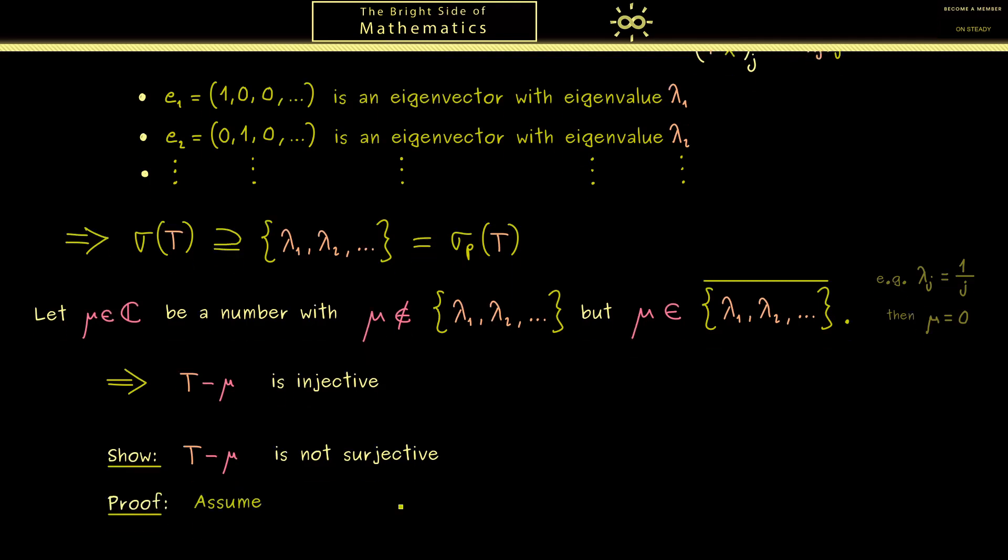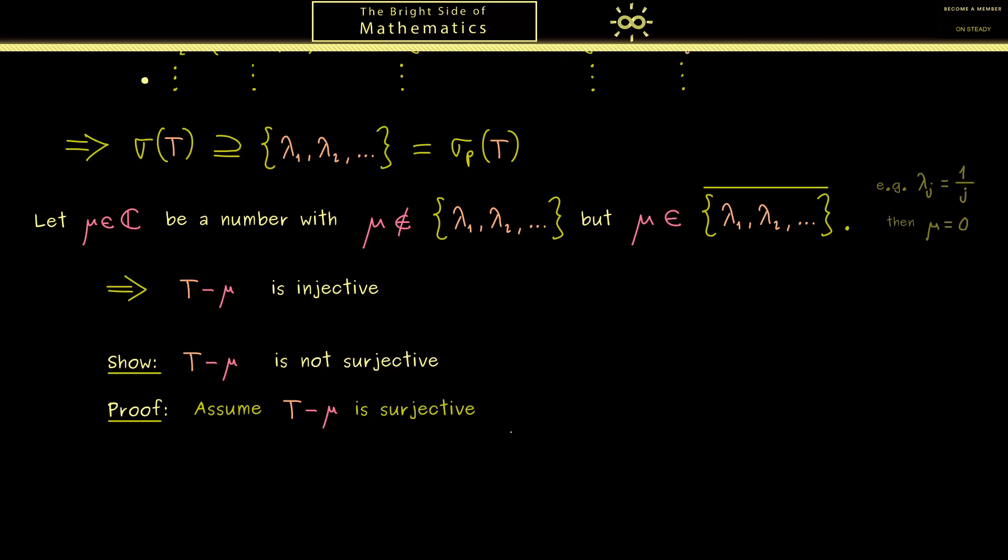For showing this let's use a proof by contradiction. Now assuming that the operator is surjective, then we know it's also bijective. Please remember the injectivity was not a problem at all. And now we can use the famous bounded inverse theorem to conclude that the inverse of our operator is also bounded.